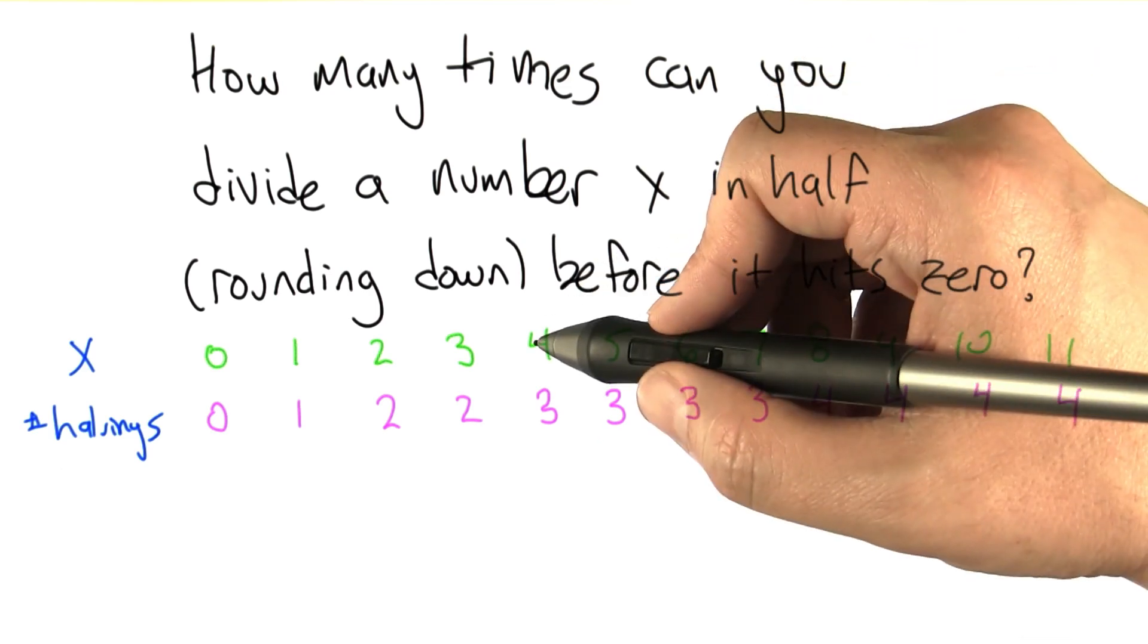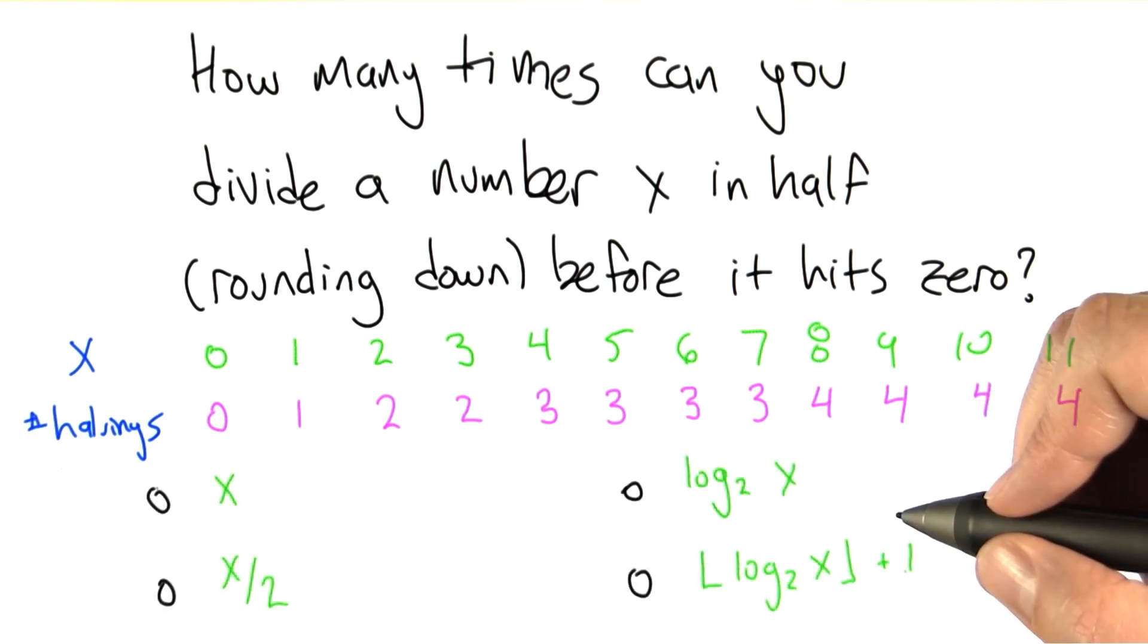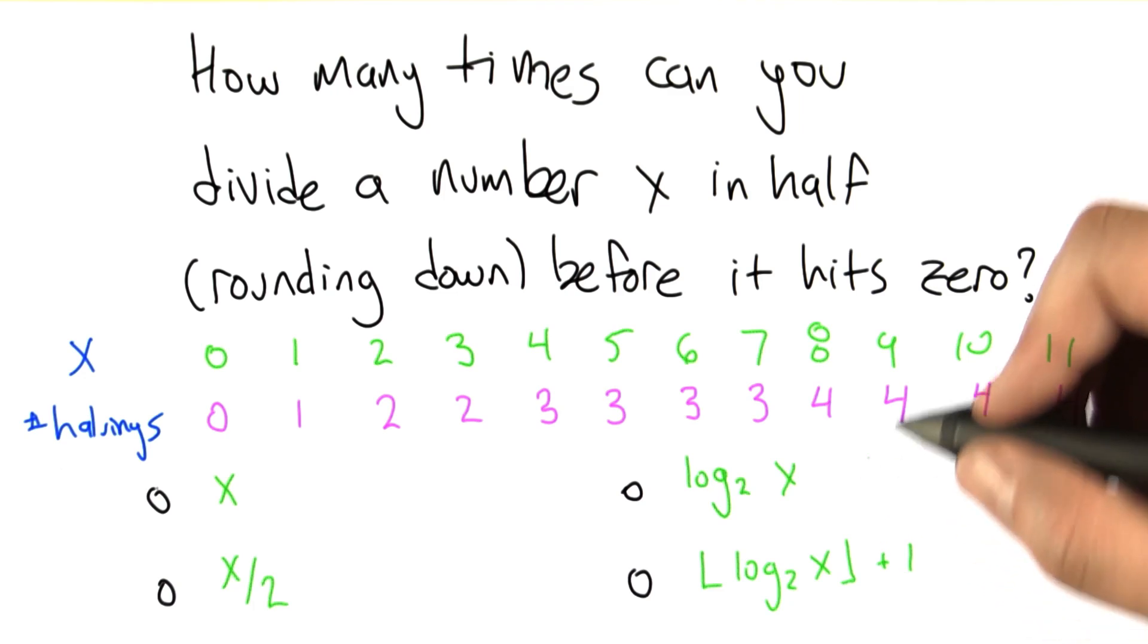8 takes 4 times - once to get it to 4, 2, 1, 0. And it stays 4 for a while and the next time it changes is at 16. So which of these functions captures the relationship between x and the number of times x needs to be halved to get down to 0?